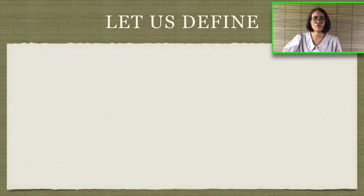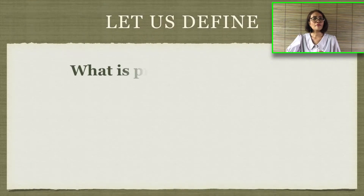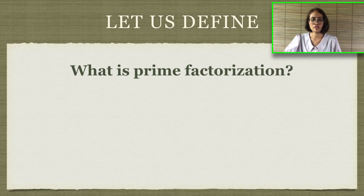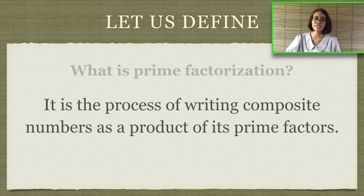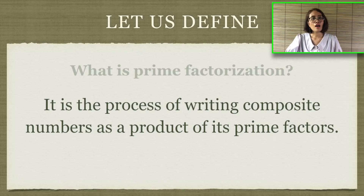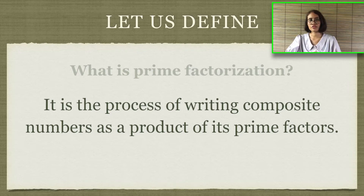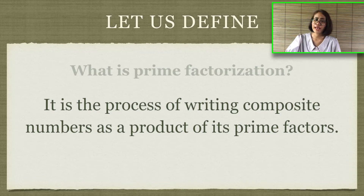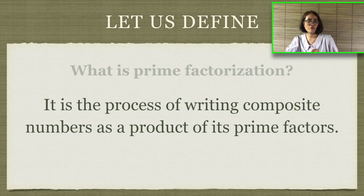Let us define it first. What is prime factorization? Prime factorization is a process of writing composite numbers as a product of its prime factors. If you remember, we had this lesson in Grade Four, so this is just a review.